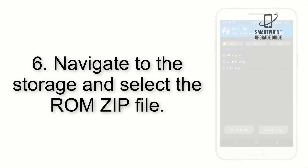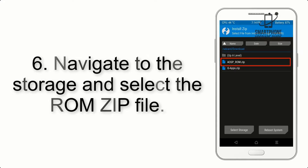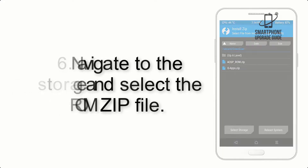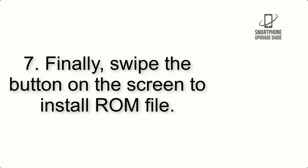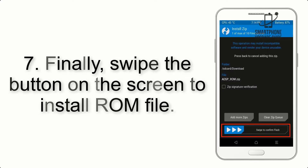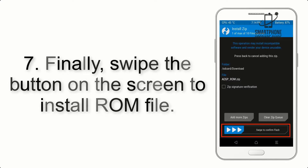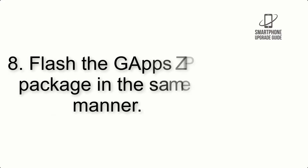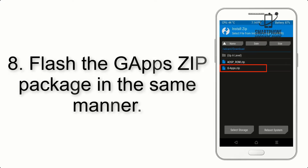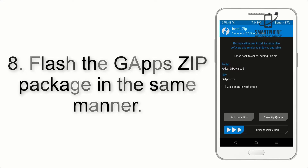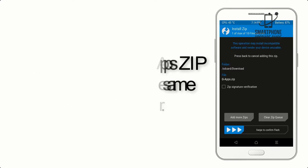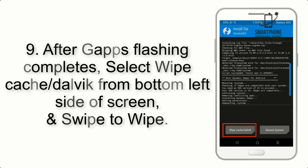Step 6: Navigate to the storage and select the ROM zip file. Step 7: Finally, swipe the button on the screen to install the ROM file.